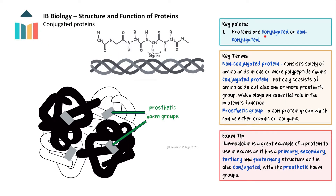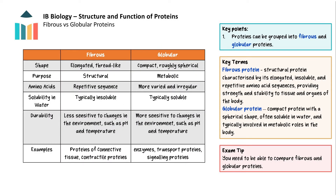Proteins are conjugated or non-conjugated. Non-conjugated proteins, also known as simple proteins, consist solely of amino acids linked together by peptide linkages. Examples include enzymes, hormones such as insulin, and structural proteins such as collagen. Conjugated proteins, also known as complex proteins, have prosthetic groups which play essential roles in the protein's function. The prosthetic groups can be organic or inorganic molecules. An example of a conjugated protein is haemoglobin, found in red blood cells, with the heme groups that bind oxygen.